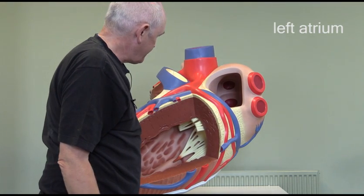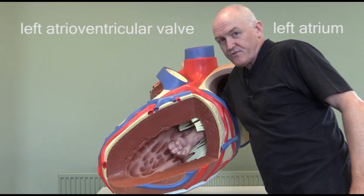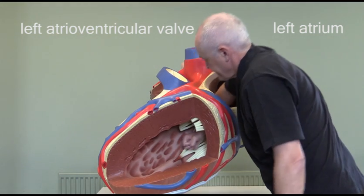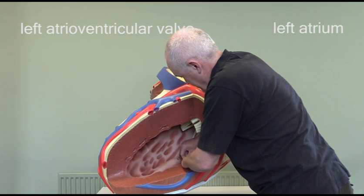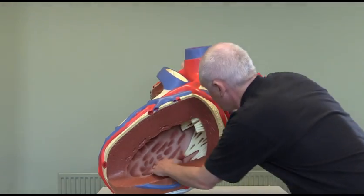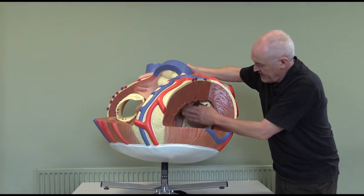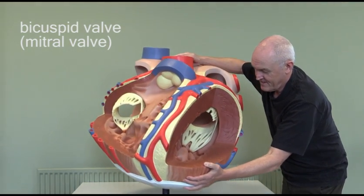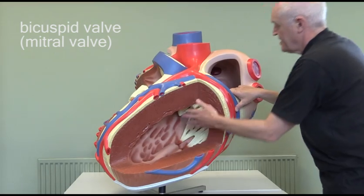The oxygenated blood from the lungs is going to drain into this chamber here, which is the left atrium — the left upper chamber of the heart. From there the blood is going to go through the left atrioventricular valve, so from the left atrium through to the left ventricle through that valve. These tendinous cords are attached to the papillary muscles in there. That valve actually only has two cusps — there's a cusp there and a cusp there.